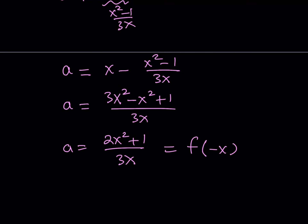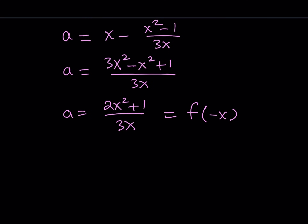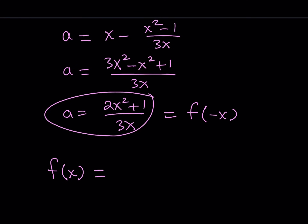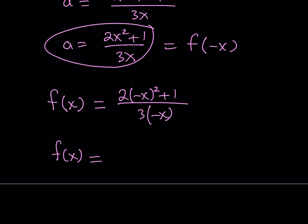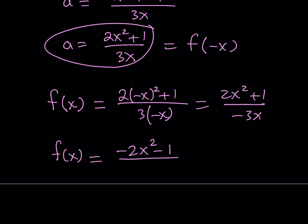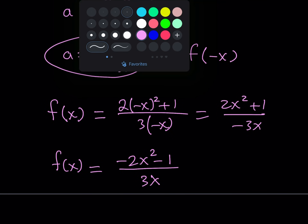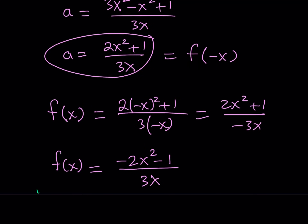To find f of x from f of negative x, all I have to do is replace x with negative x. Substituting into A = (2x squared + 1) over 3x: the numerator 2x squared stays even, but the denominator becomes negative 3x. Multiplying top and bottom by negative 1 gives f of x = (negative 2x squared minus 1) over 3x.